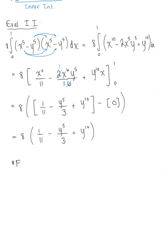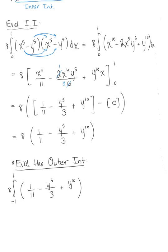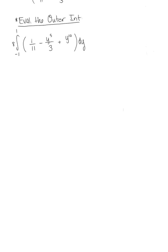So at this point we are now ready to go ahead and evaluate the outer integral. So again, I'm going to keep 8 on the outside here. And we have the integral from negative 1 to 1 now of 1 by 11 minus y to the 5th divided by 3 plus y to the 10th dy. And it's all set up and ready for us to integrate.